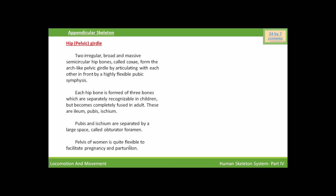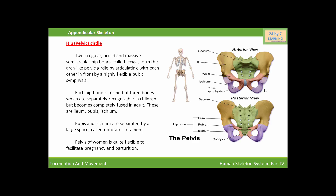The pelvis region of the female is quite flexible to facilitate pregnancy and parturition. This is the diagrammatic representation of the pelvic girdle. Here we show the position of the pelvic girdle in the complete human skeleton system, which forms the hip region of the human body. This is the anterior view and this is the posterior view of the pelvic girdle. In the posterior view, this is the sacrum and coccyx of the vertebral column, and these two coxal bones fuse at the point called the pubic symphysis to form the pelvic girdle.